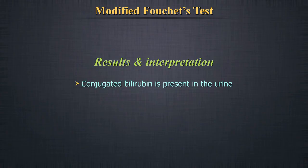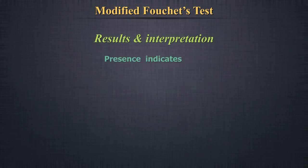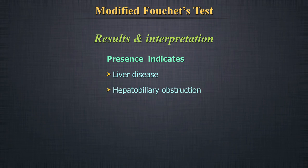Usually, only conjugated bilirubin is present in the urine. Its presence may indicate liver disease, hepatobiliary obstruction, early jaundice, or biliary stasis.